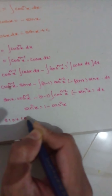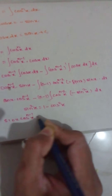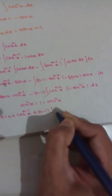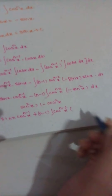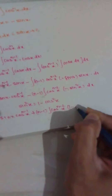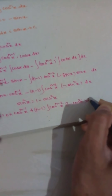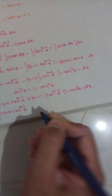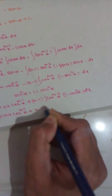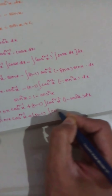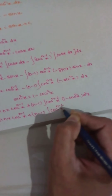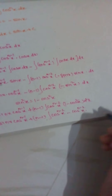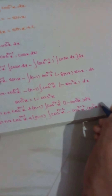Therefore, sin x · cos^(n-1)x — the minus and the minus from −sin x combine to give a plus. Therefore, (n-1) · ∫cos^(n-2)x · sin²x dx. We write sin²x as 1 − cos²x, giving (n-1) · ∫cos^(n-2)x · (1 − cos²x) dx.